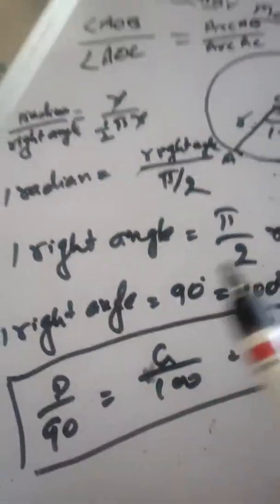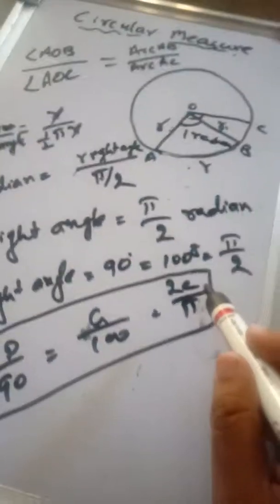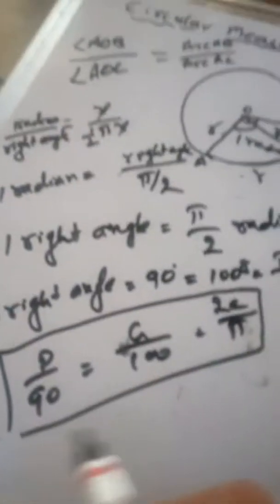So for changing from sexagesimal, centesimal, or radian measures, we will use this common formula.